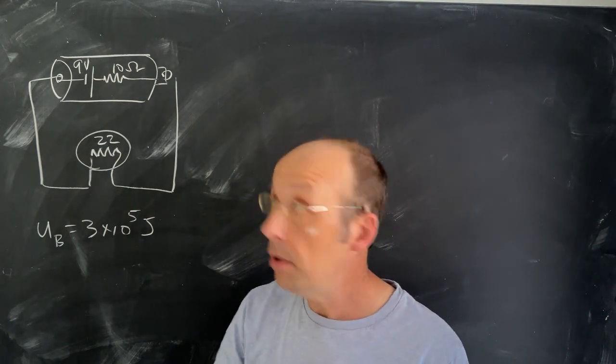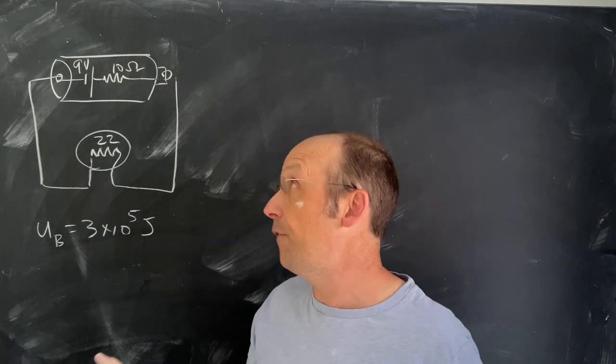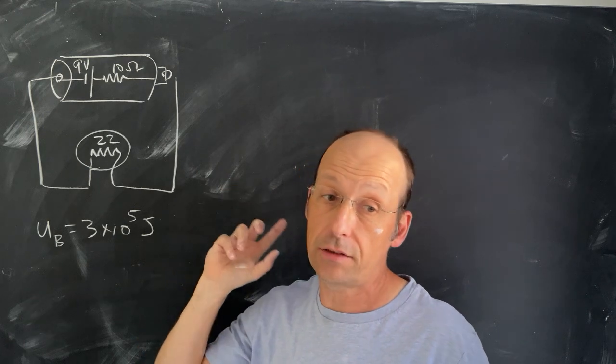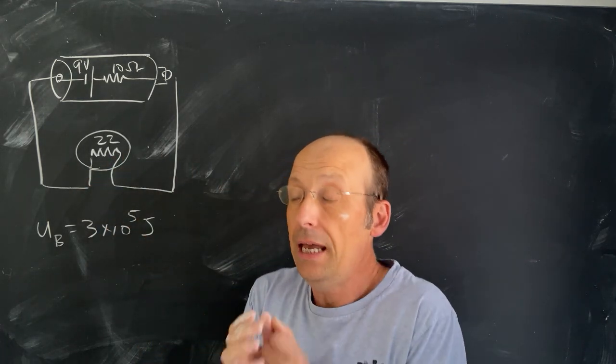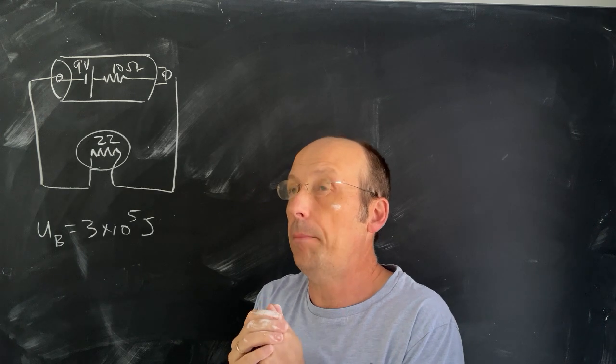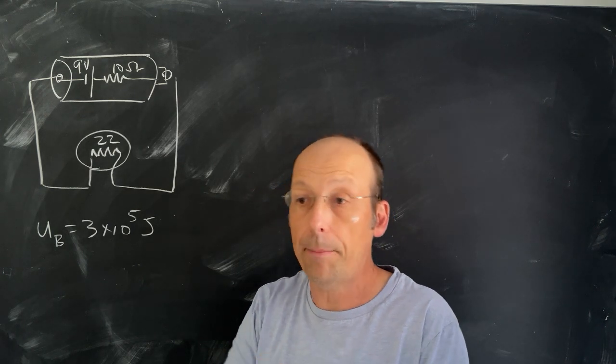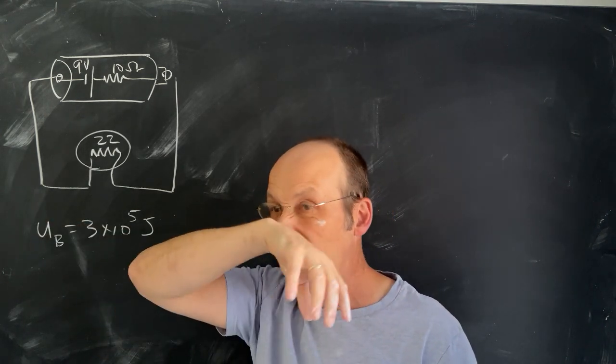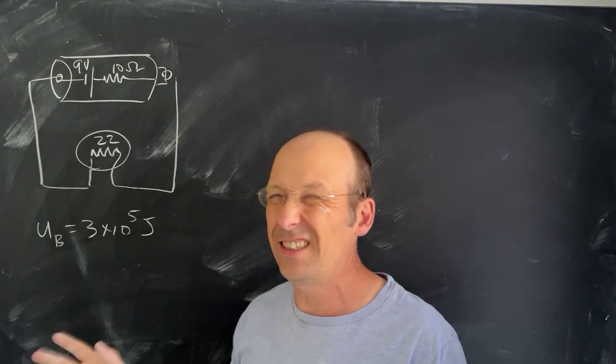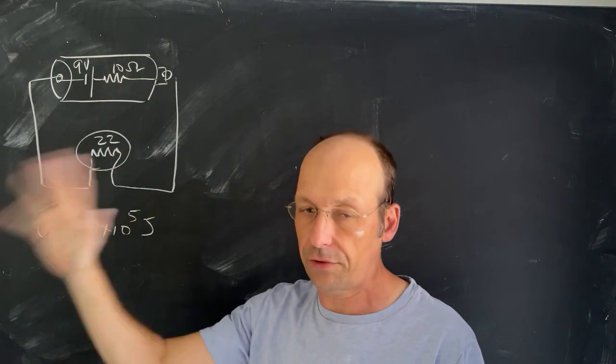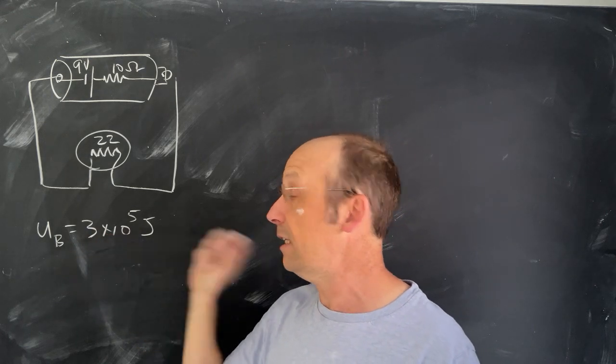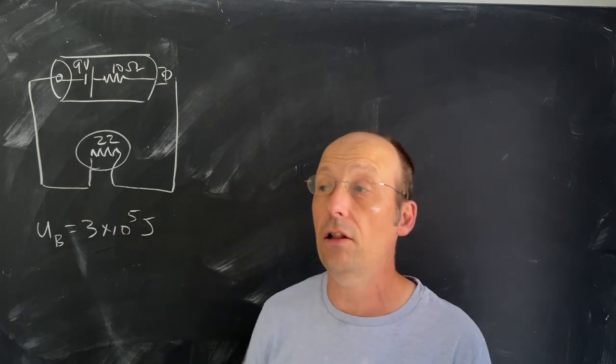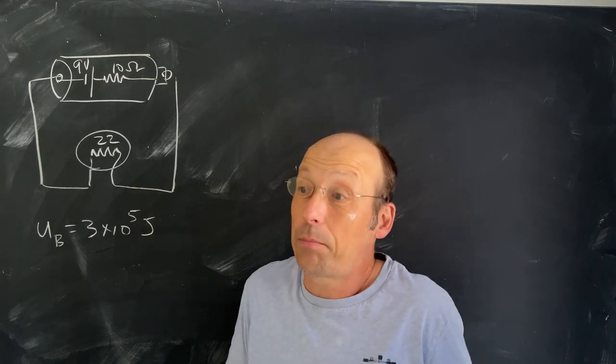Here is a problem that I made up. I have a 9-volt battery with an internal resistance of 10 ohms connected to a 22-ohm light bulb. In this case, it's a normal incandescent light bulb with a resistor that gets really hot. We're going to assume the resistance doesn't change as the current changes. If the battery stores 3 times 10 to the 5th joules, how long will the light stay on? That's a pretty cool problem.